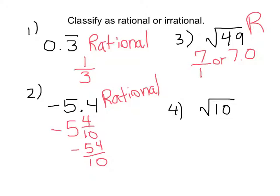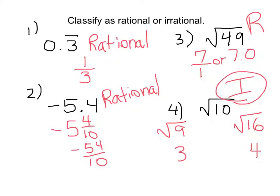Number three: square root of 49. The square root of 49 — the positive root is 7, which is the same as 7 over 1 or 7.0, so it's a fraction and also a terminating decimal. This is a rational number. Finally, number four: square root of 10, which is not a perfect square. We know 3 squared equals 9 and 4 squared is 16, so square root of 10 is between 3 and 4. If you take your calculator and hit the square root of 10, you get 3.1622776... and it keeps going. So this is an irrational number — one of those crazy numbers that never terminates and never repeats.